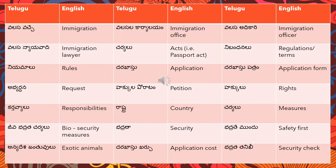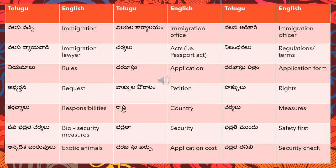'Anya desa jantuvulu' means exotic animals. 'Darkhaastu khartsu' means application cost. 'Bhadrata tanikhi' means security check; 'tanikhi' means check. 'Karyalayam' means office. 'Sarihaddu bhadrata' means border security — 'sarihaddu' means border.